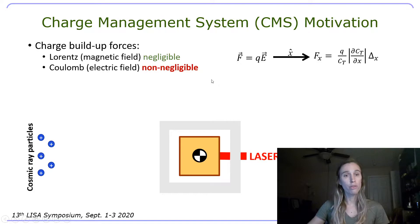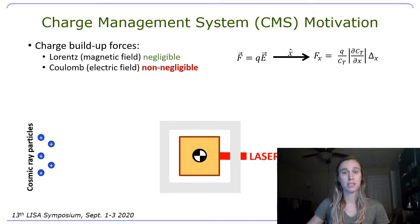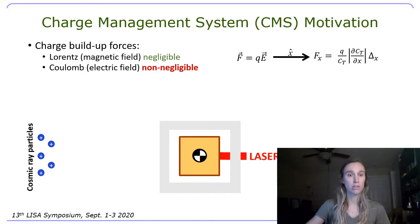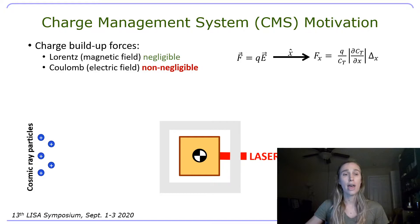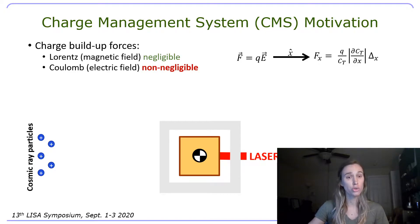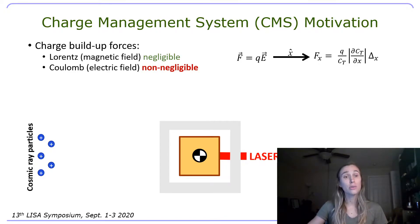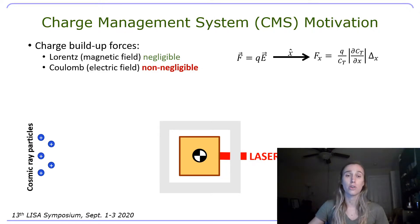So a brief overview as to why we even need a charge management system. Due to the space environment, there are cosmic rays and also some solar energetic particles that, if left to build up on the test mass, will produce some charge-induced forces. We have Lorentz and Coulomb forces due to charges. Lorentz forces, for this case, are negligible, but the Coulomb forces are non-negligible.